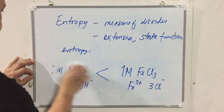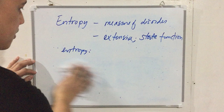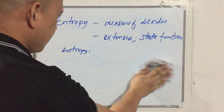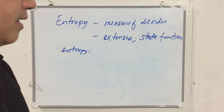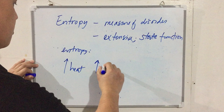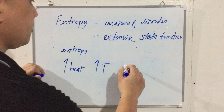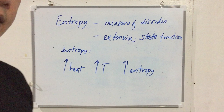For gases, once a substance goes into the gaseous state, the entropy is already very high. In that case, the determining factor becomes temperature. As heat increases, temperature increases, and entropy also increases. Among different substances, whichever has the highest temperature will also have the highest entropy.